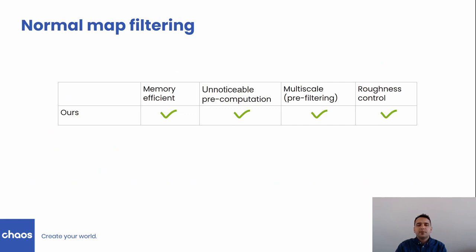Our method takes less memory than LEAN mapping, has unnoticeable pre-computation for reasonably large maps, and provides pre-filtering, which is important for distant views. These properties of our solution are crucial for our practical application.